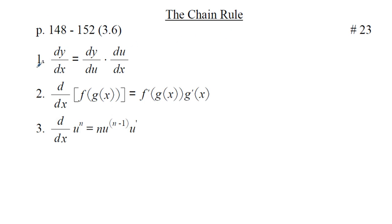Here we have items 1, 2, and 3, and we're going to concentrate on items 2 and 3. Item 2: d/dx of f(g(x)), the composition of a function, is f′(g(x)) — the derivative of the outside evaluated at the inside — times g′(x), the derivative of the inside. Item 3: d/dx of u^n equals n times u^(n−1) times the derivative of u — the power rule combined with the chain rule.